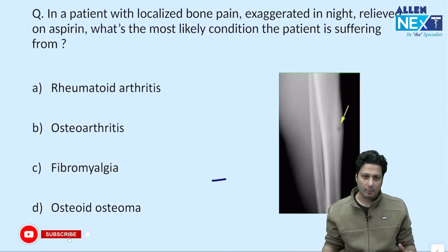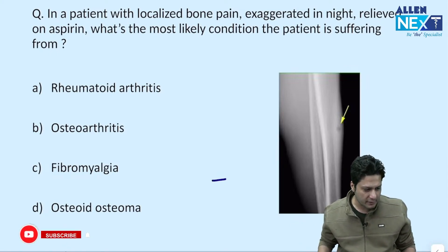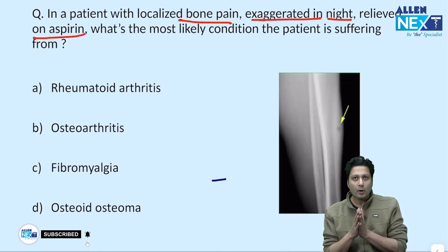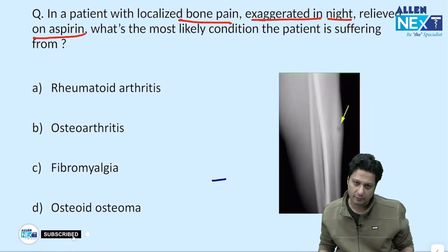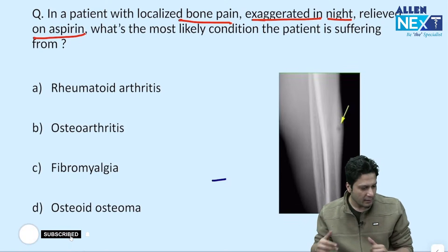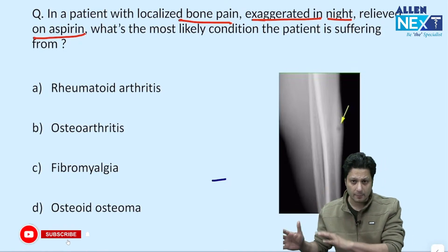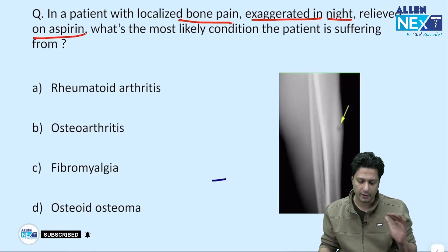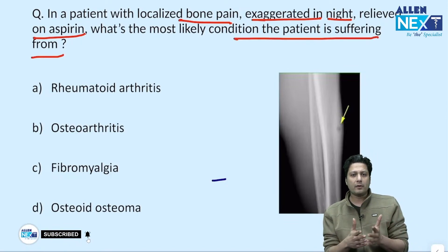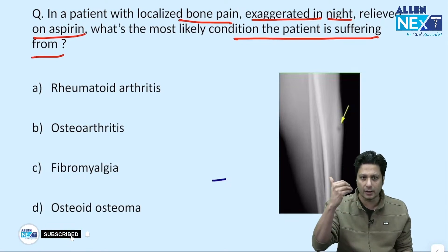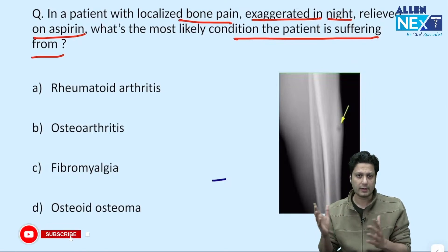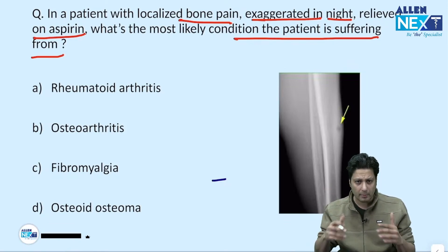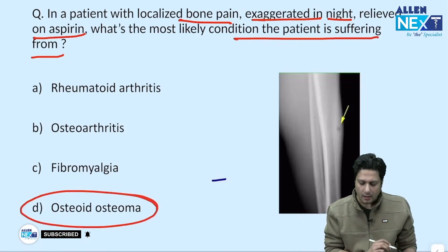In my experience, in recent years, this is probably the first time a question like this was asked: in a patient with localized bone pain exaggerated at night and relieved on taking aspirin. The moment you see bone pain at night dramatically relieved by aspirin, we have discussed in detail that the answer is certainly osteoid osteoma. So what is the most likely condition the patient is suffering from? Obviously, the answer is straight away osteoid osteoma — the majority of you must have answered this correctly.